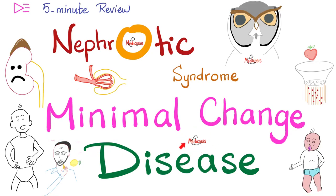What is going on, lovely people? This is Medicosis Perfectionators, where medicine makes perfect sense. We continue our 5-minute review playlist. In a previous video, we had an introduction about nephrotic syndrome. From now on, we will talk about their histopathology subtypes one by one, starting with minimal change disease, which can be primary, starting in the kidney, or secondary to Hodgkin's lymphoma. Now, let's get started.